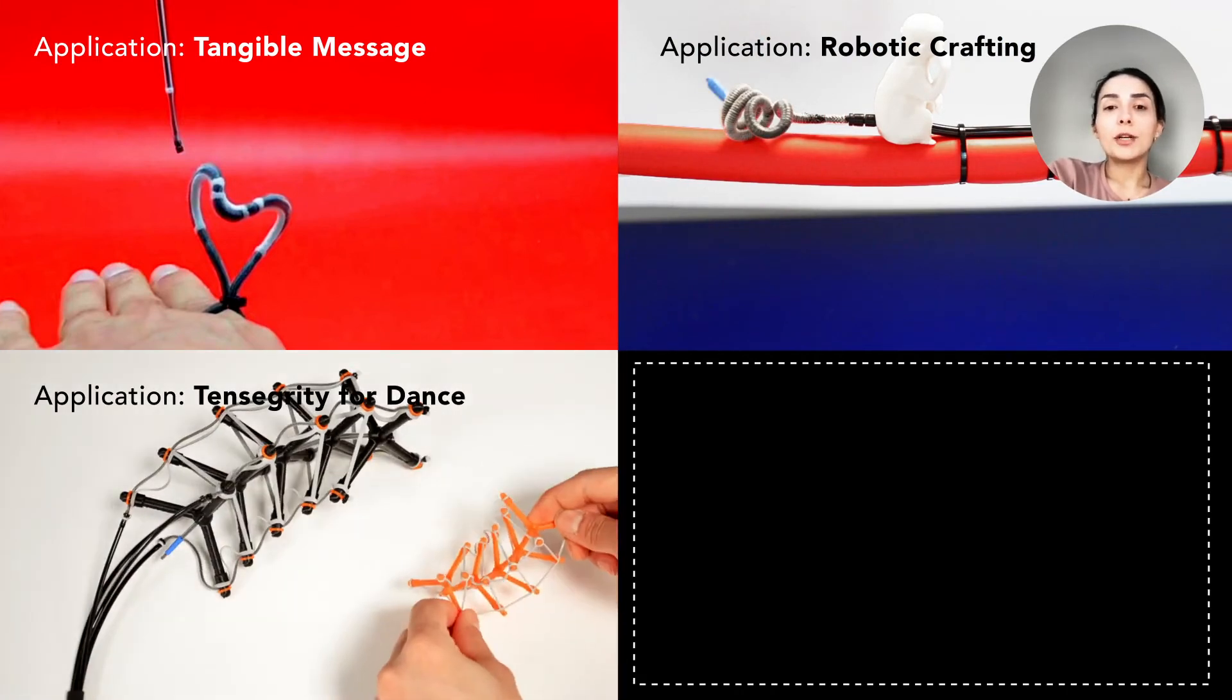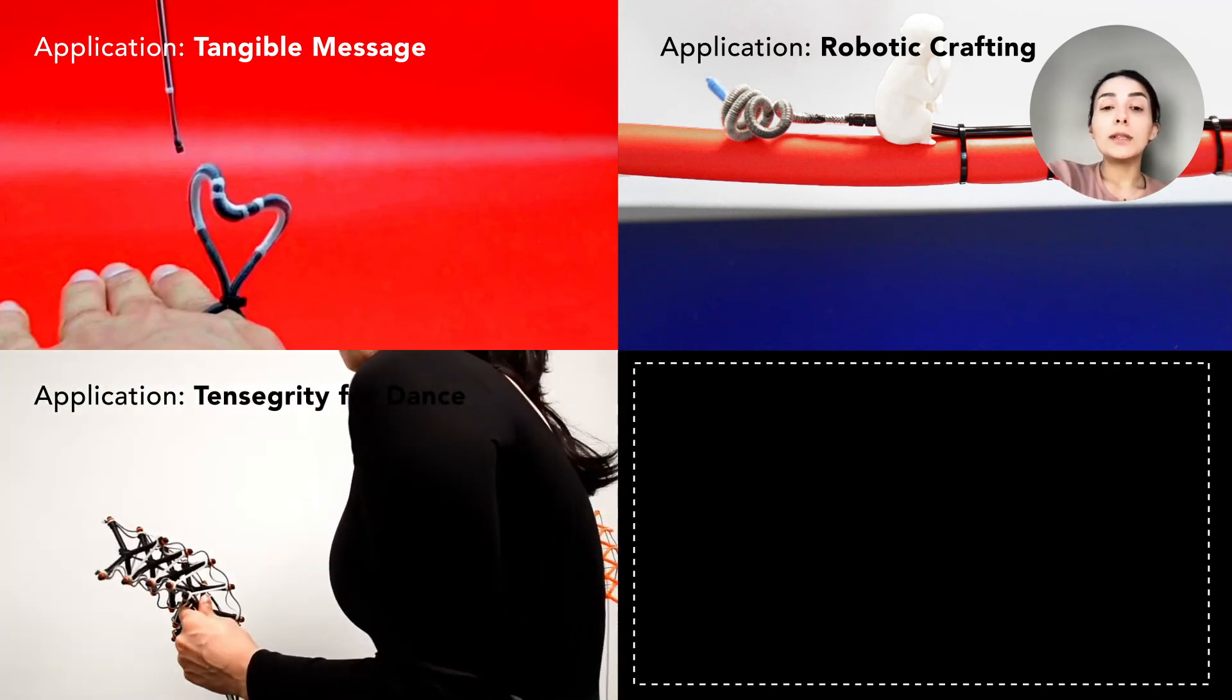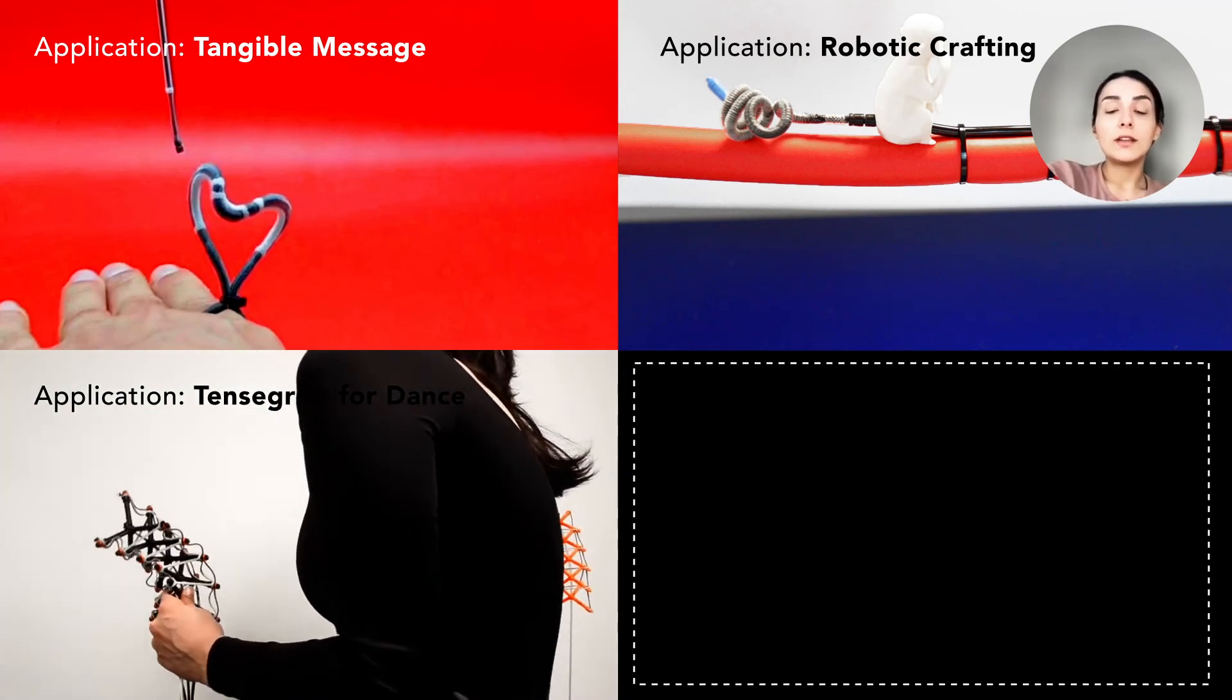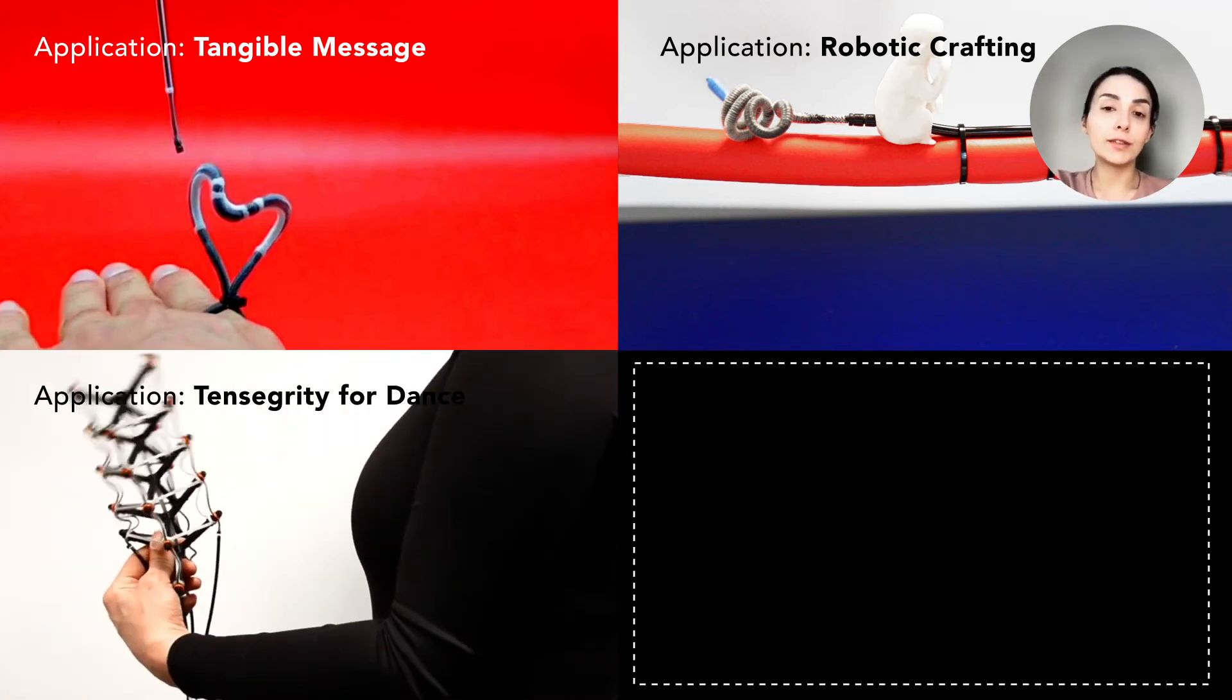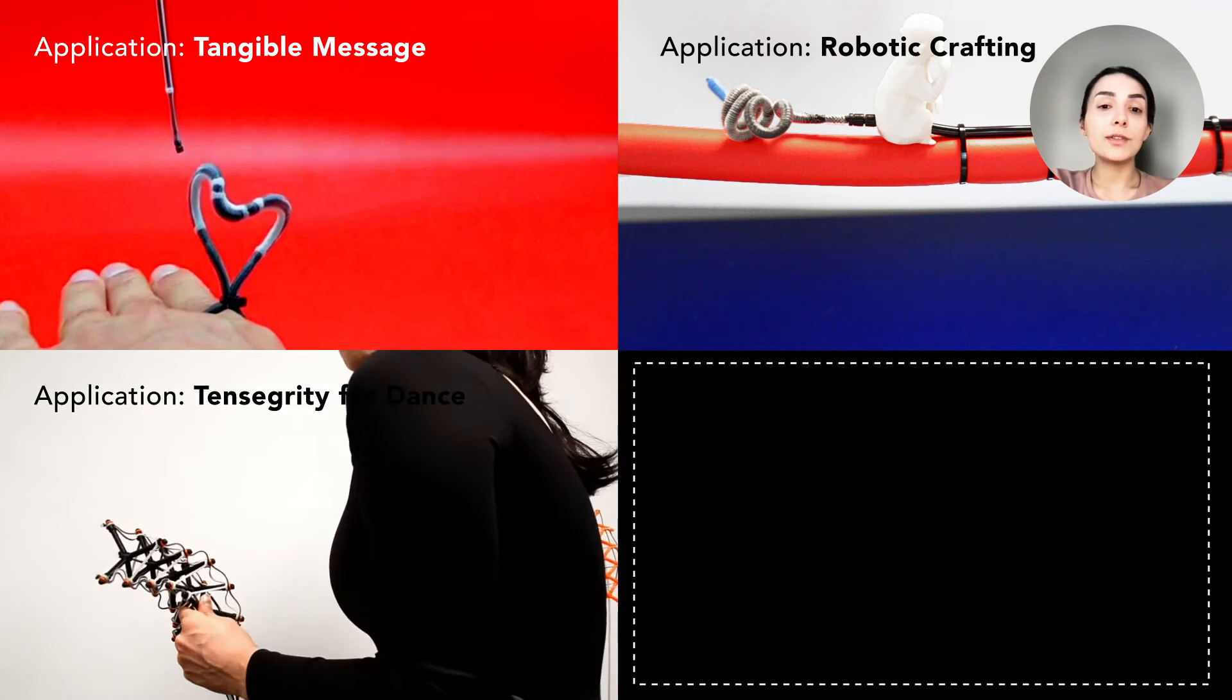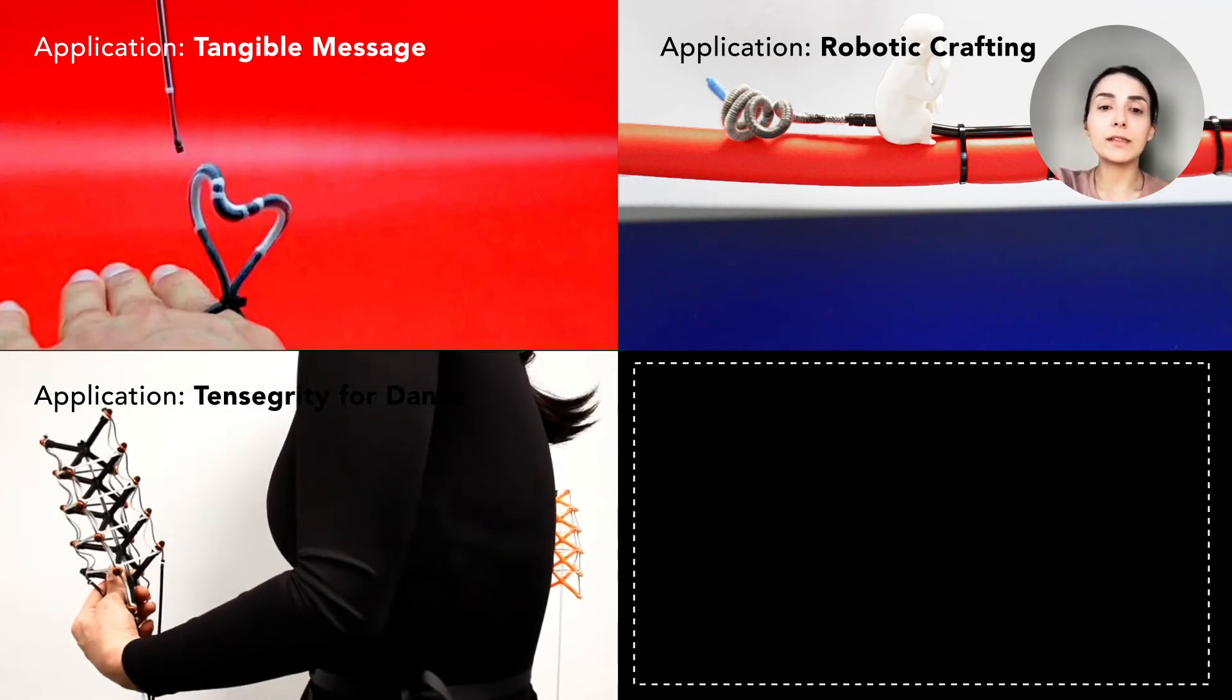The fibers can further be combined with a rigid structure as active tendons. Here, we demonstrate a standalone and a garment-attached spine tensegrity using a bundle of contractible fibers. We envision that such a device could be a tangible mediator for choreographer-dancer interaction.